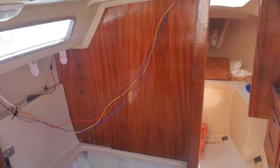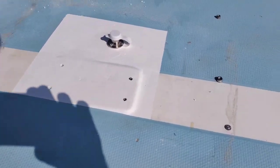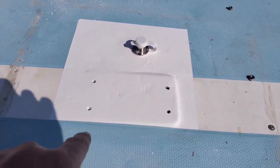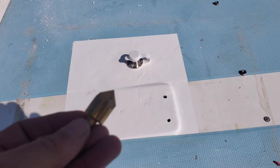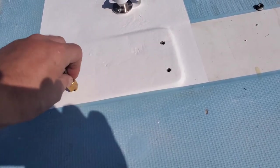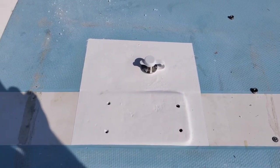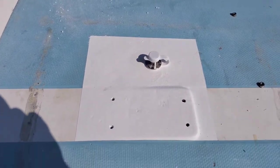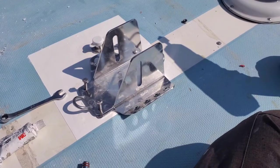All right everybody, we are back. We are up topside. I got the holes pre-drilled. Next I'm gonna use my countersink bit and we'll give it a little bit of a countersink so that the sealant will have something to go down in. Then I'll get the new mast step and I'll be back.